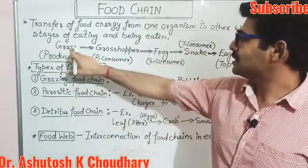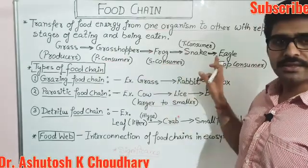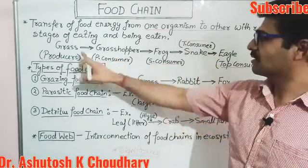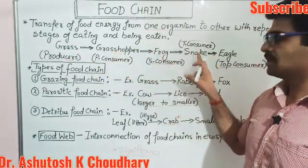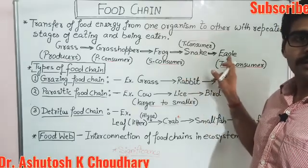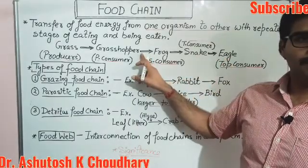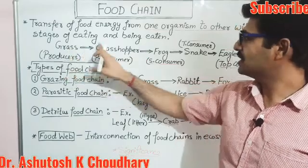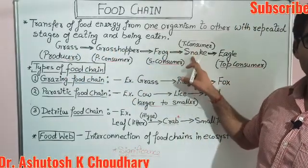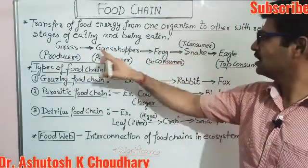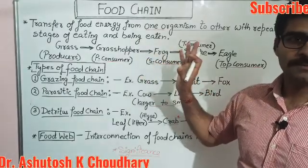Here is an example of a food chain: grass, grasshopper, frog, snake, eagle. This is a typical example of a food chain. It has different repeated stages — just like a series — and is known as a food chain.